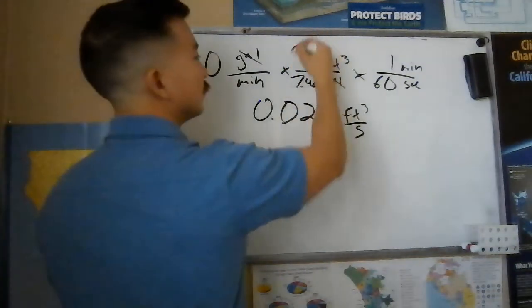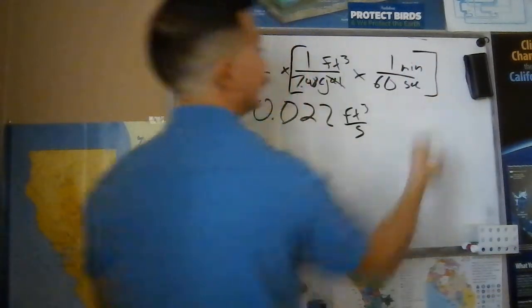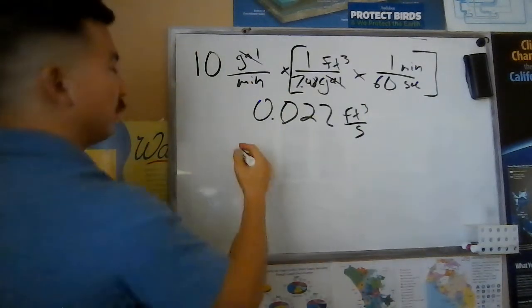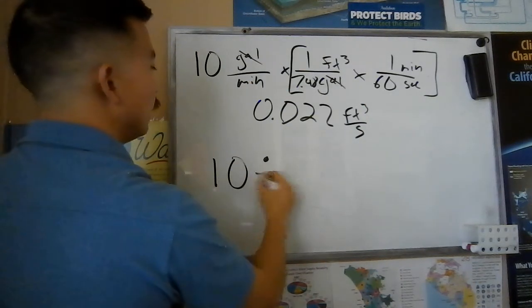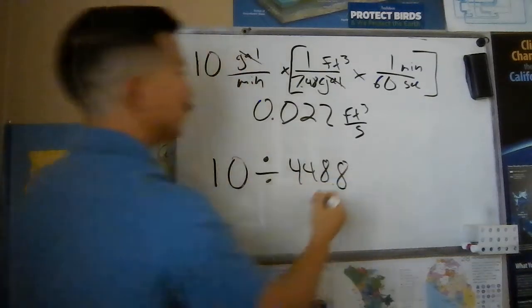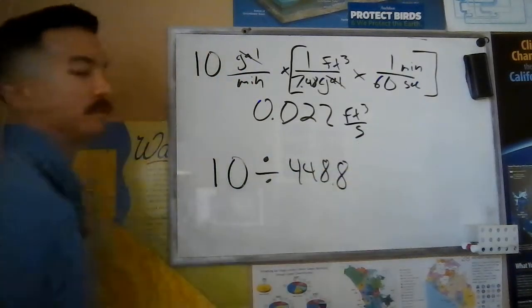Keeping in mind that if you're using the shortcut, the only difference here, the 7.48 times 60 is still going to give you the 448.8. But in this case, we're going to do 10 divided by 448.8 to get us 0.022 cubic feet per second.